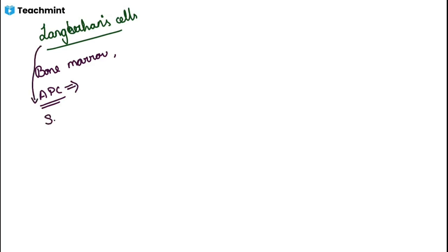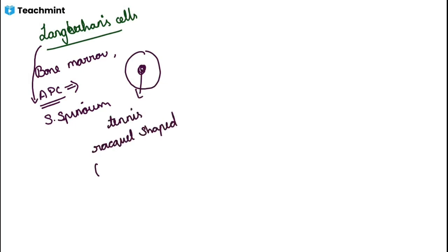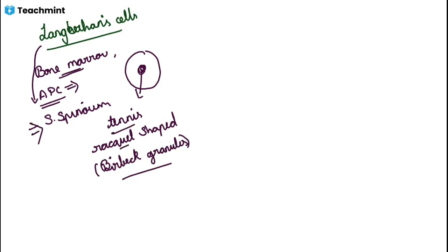Langerhans cells are mainly present in stratum spinosum, which I had mentioned earlier. If we examine Langerhans cells internally, we will see tennis racket-shaped Birbeck granules — this is an important MCQ point from a pathology perspective as well. So to summarize: Langerhans cells are derived from bone marrow, are antigen-presenting cells, are most commonly seen in stratum spinosum, and contain tennis racket-shaped Birbeck granules in the cytoplasm.